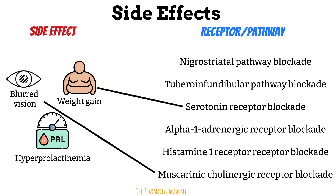Hyperprolactinemia results from blockade of D2 receptors in the tuberoinfundibular pathway. Dopamine normally inhibits prolactin release, so blocking D2 receptors in this pathway leads to increased prolactin secretion, resulting in milk production, enlargement of male breast tissue (gynecomastia), and menstrual disturbances.